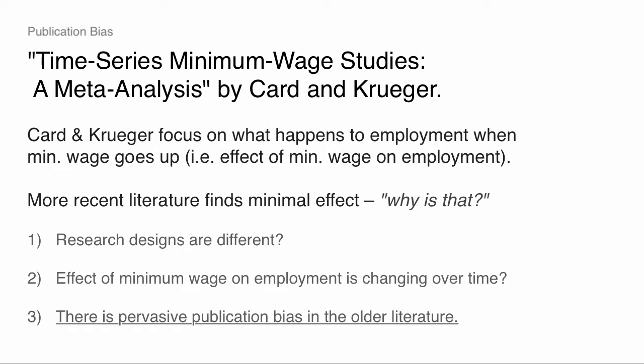Some combination of publication bias and specification searching is going to lead to a very misleading literature on an incredibly important policy question, where leading scholars in the leading departments were working on this for decades and produced a couple dozen studies. Even in that case, they're going to say we really can't trust this literature. This isn't some esoteric exercise — this is really important stuff. People are testifying in front of Congress about major economic policy changes based on 20 studies, and Card and Krueger are going to say these studies do not have evidential value.